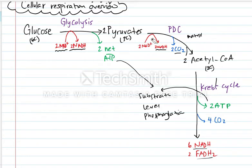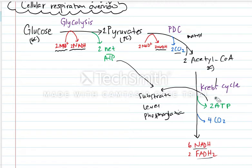The pyruvates then go through the pyruvate dehydrogenase complex in the mitochondrial matrix to produce two acetyl-CoA units. This process produces two NADHs per glucose. The acetyl-CoAs then go through the Krebs cycle in the mitochondrial matrix as well. This process produces two ATPs per glucose, six NADHs, and two FADH2s.